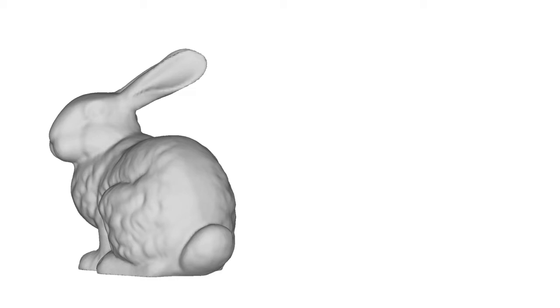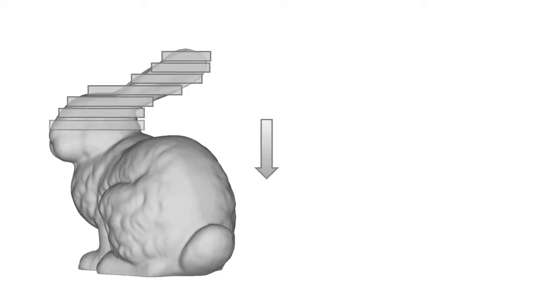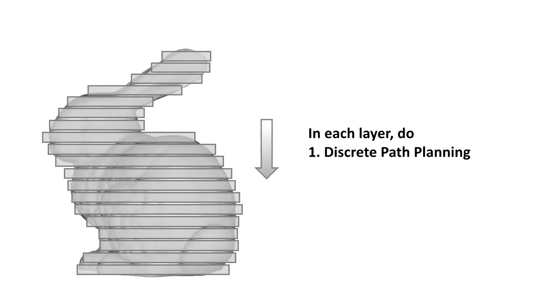Given a sliced input model, our algorithm traverses the layer stack from top to bottom, maintaining the invariant that each layer is a continuous cyclic path that provides sufficient support for the layer above. In each layer, we first solve a discrete path planning problem to connect model paths and support points into a continuous deposition path. The resulting path is then further optimized with respect to length, smoothness, and model avoidance.